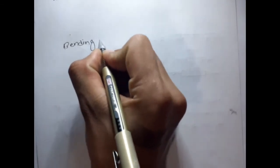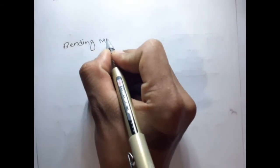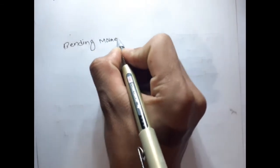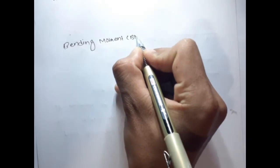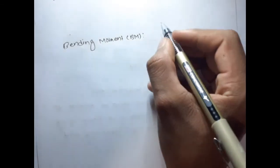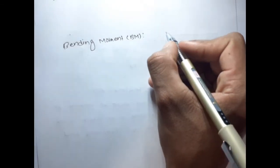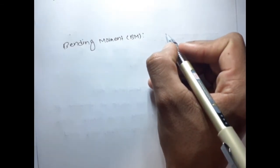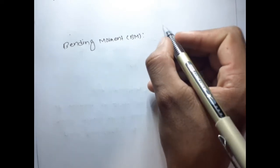Today we are talking about bending moment, which is denoted by BM. It is defined as the algebraic sum of the moment of all forces acting on either side of the section.